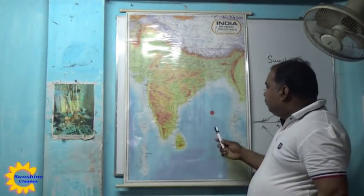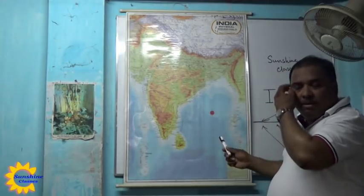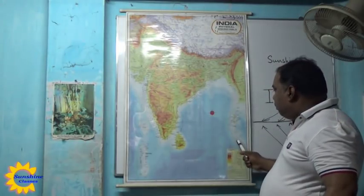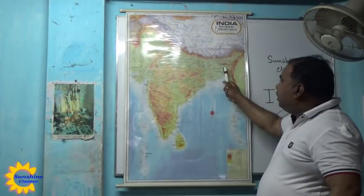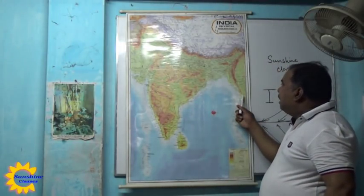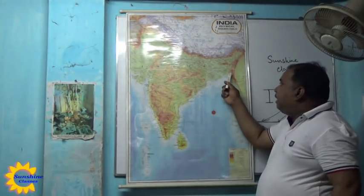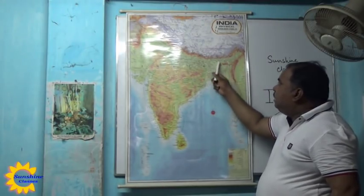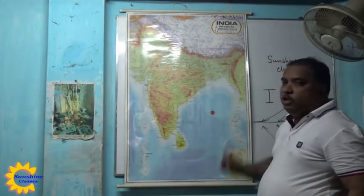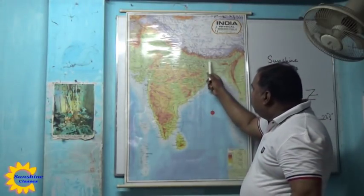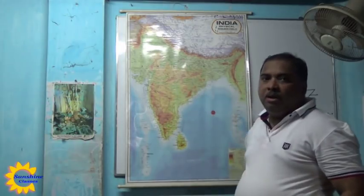On 29th May, the southwest monsoon causes rainfall in the Andaman and Nicobar Islands. The Bay of Bengal branch of the southwest monsoon first causes rainfall there, then moves toward Myanmar. It has a tendency to enter Myanmar but is obstructed by the Arakan Yoma mountain ridge. When obstructed, it turns and causes rainfall in the entire northeast India, Bangladesh, Tripura, and then West Bengal.